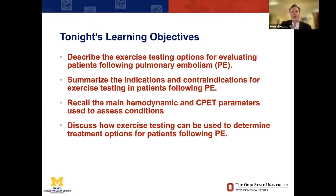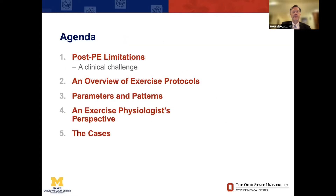Our learning objectives: we will describe exercise testing options when evaluating patients after a pulmonary embolism, identify indications and contraindications for these studies, give a broad overview of parameters and patterns we look for, and discuss how these studies can help determine treatment options. Our agenda covers limitations of evaluating post-PE patients, an overview of protocols and patterns, Nicole's perspective on exercise studies, and then Victor will present the cases.